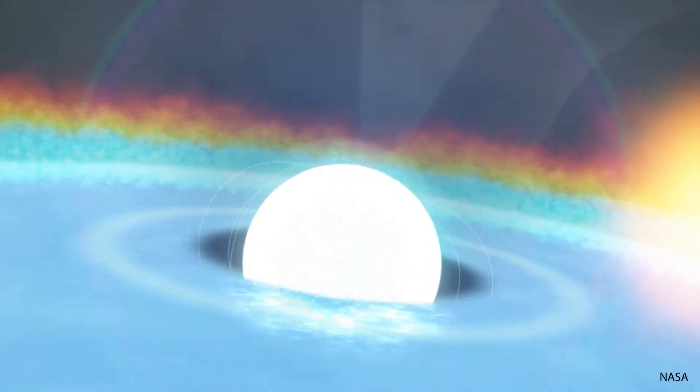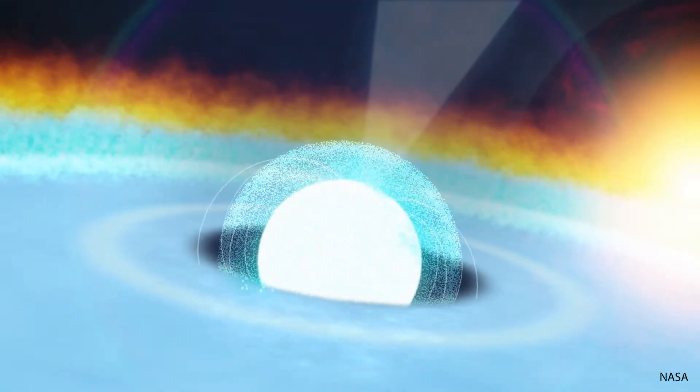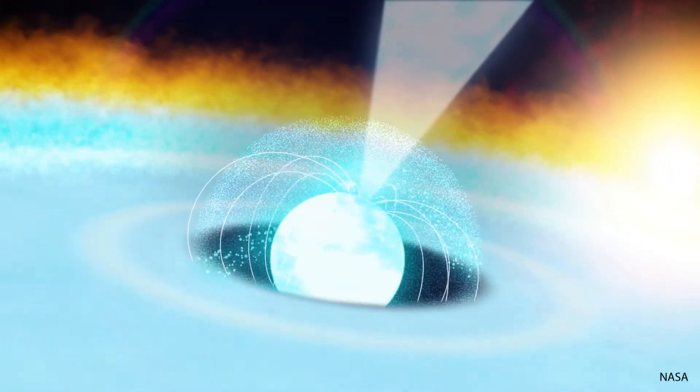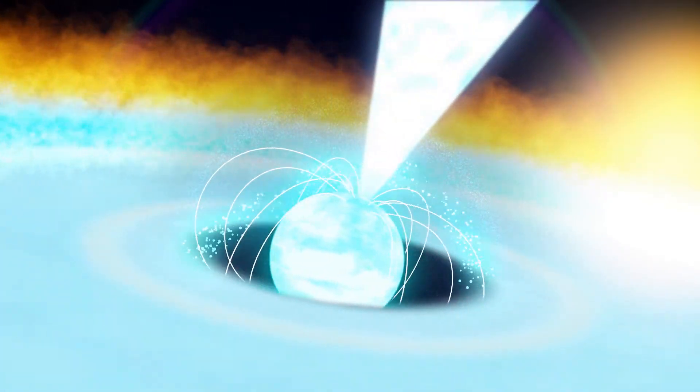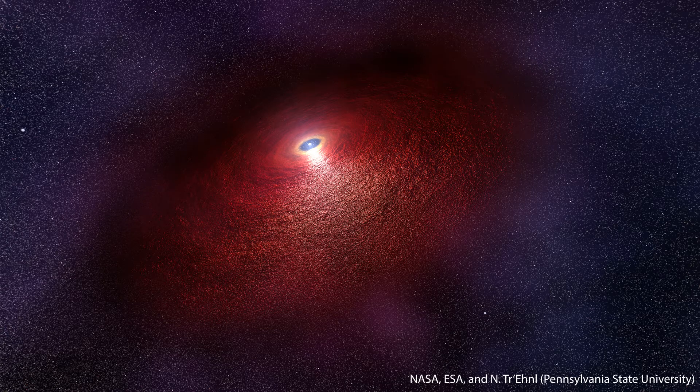One of such starquakes was observed on December 27th 2004 when a magnetar, a type of a neutron star, emitted large amounts of gamma ray emissions. The magnetar released more energy in one-tenth of a second than the sun releases in 150,000 years.